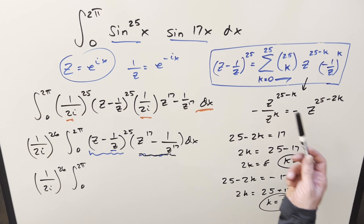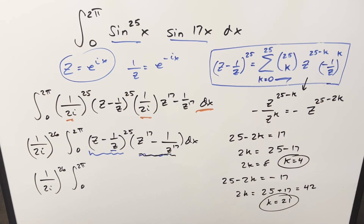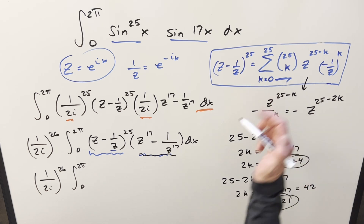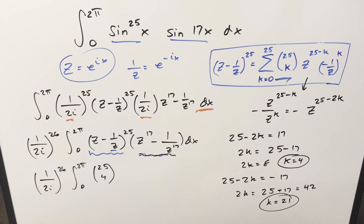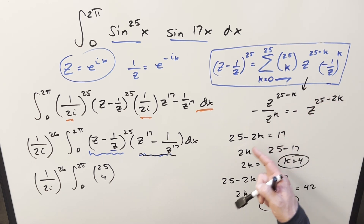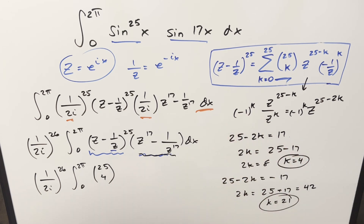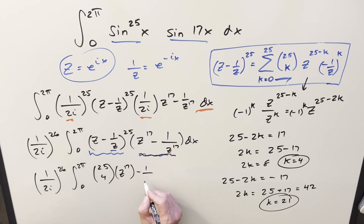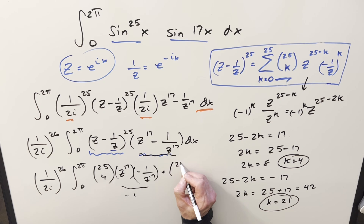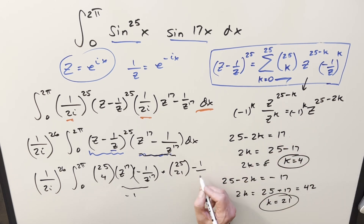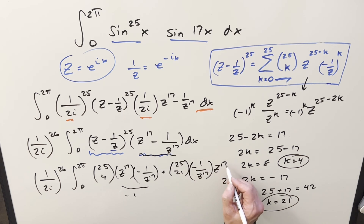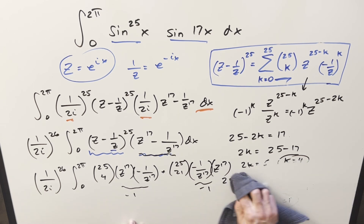For k = 4: we get C(25, 4). Since k = 4 is even, (−1)^4 = 1, so this term gives z^17 multiplied by (1/(2i))^26 and then the sin(17x) factor −1/z^17, yielding −1. For k = 21: we get C(25, 21). With the −1/z^17 term from the expansion times z^17 from sin(17x), again we get −1. So both terms contribute a negative coefficient.